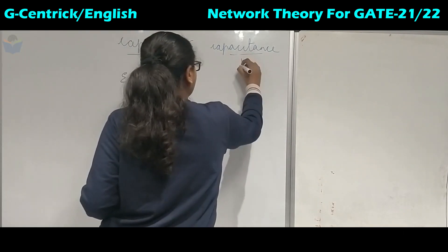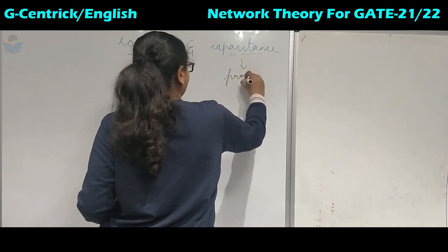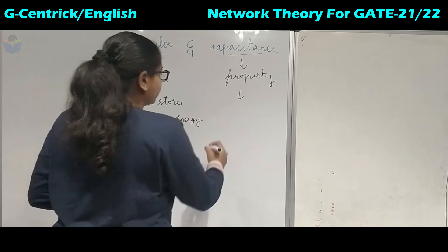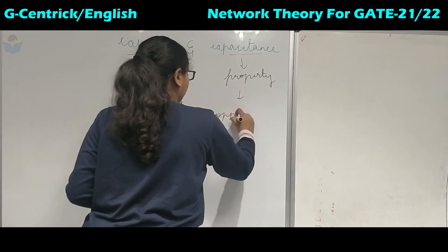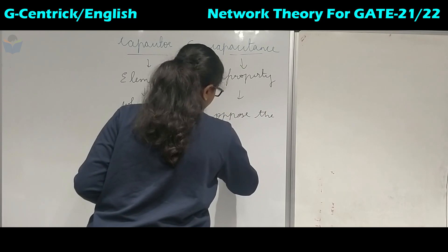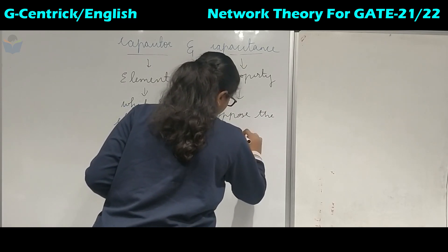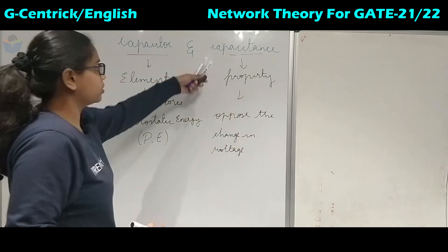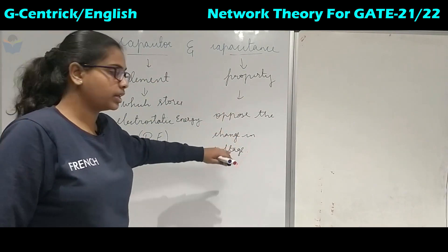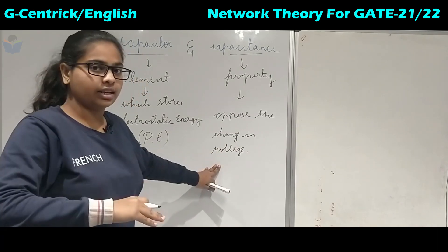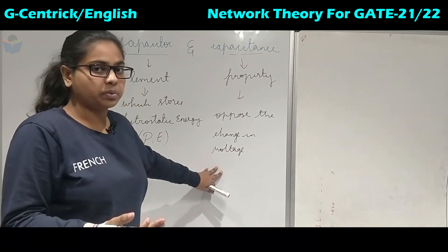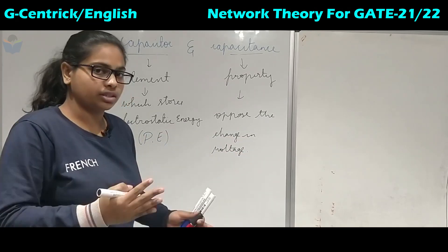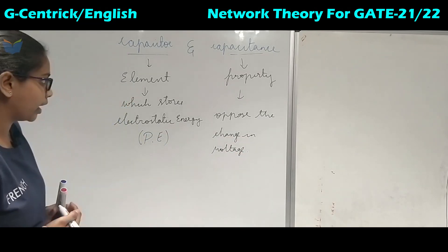So what do we mean by capacitance? It is the property of the material which opposes the sudden change in voltage. Whereas inductance is the property of the material which opposes the change in current, and resistance opposes just the flow of electric current.